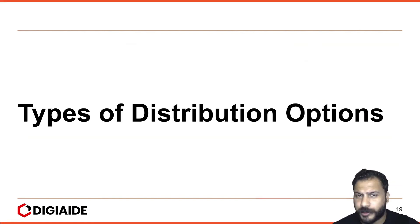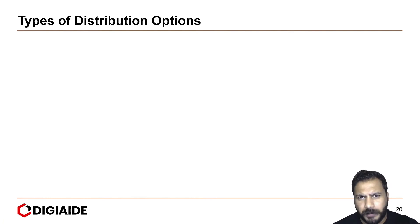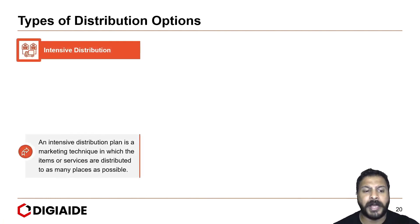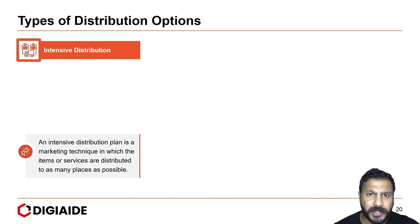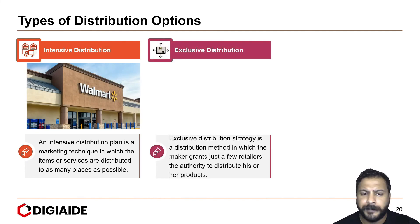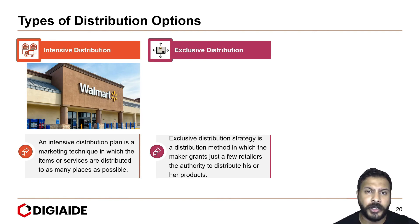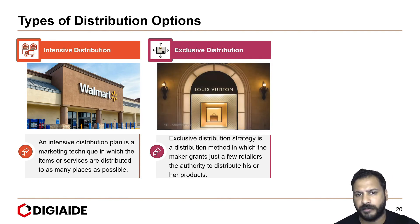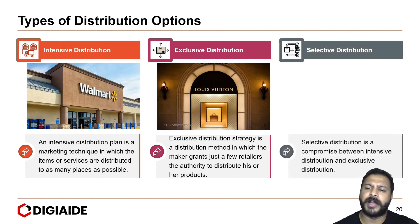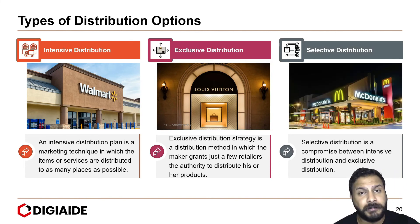Finally, the types of distribution options when you start a business — there are three broad options. The first is intensive distribution: a marketing technique in which items or services are distributed to as many places as possible, such as Walmart stores. Exclusive distribution is a strategy in which the marketer grants just a few retailers the authority to distribute his or her products, for instance Louis Vuitton stores. Selective distribution is a compromise between intensive and exclusive distribution, for instance McDonald's stores.